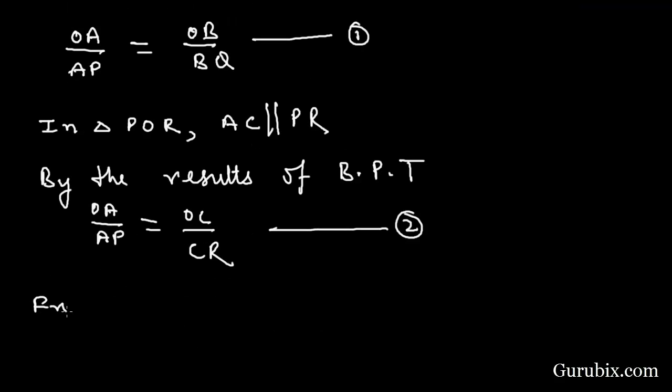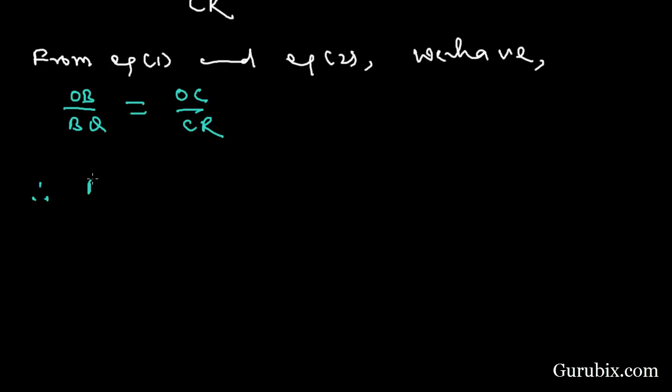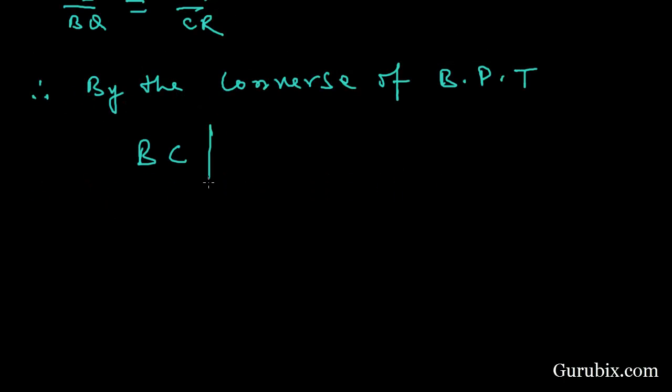From equation number one and equation number two, because OA over AP equals OA over AP, then OB over BQ equals OC over CR. Therefore, by the converse of BPT, BC is parallel to QR. This is the solution of the question. Thank you.